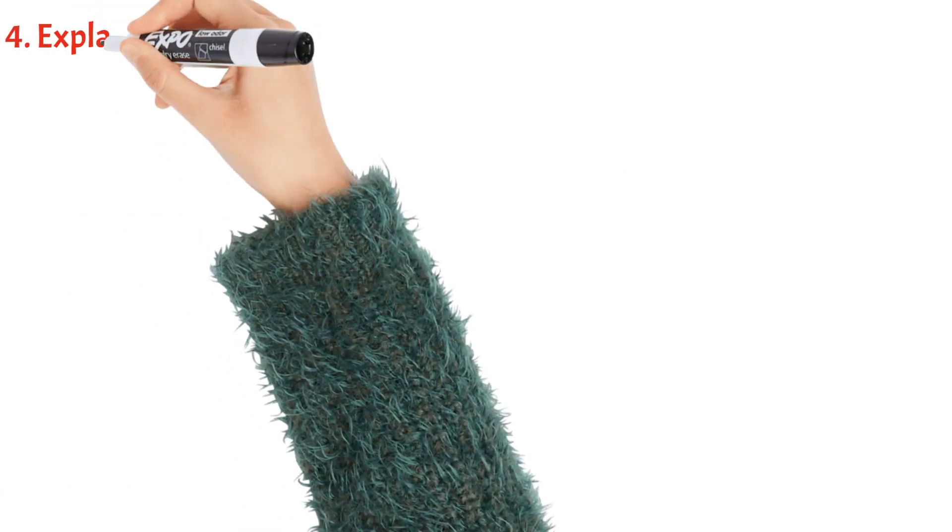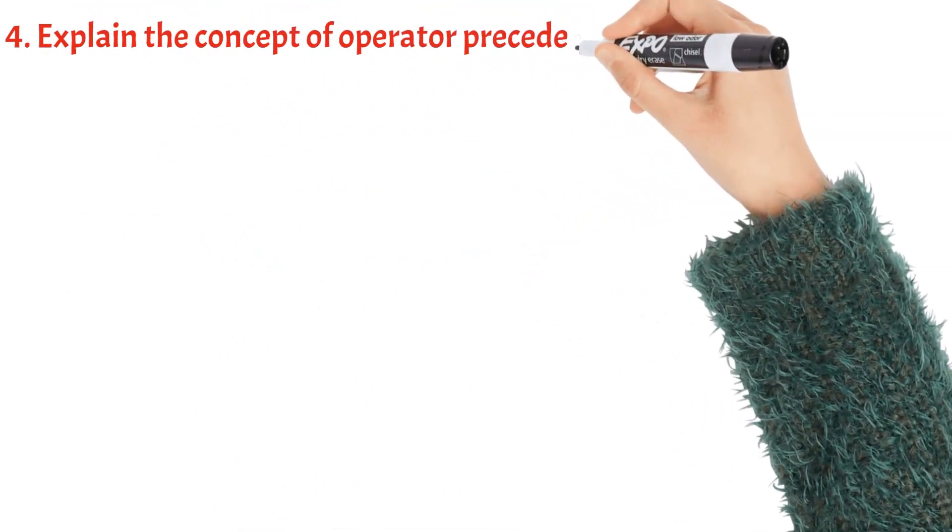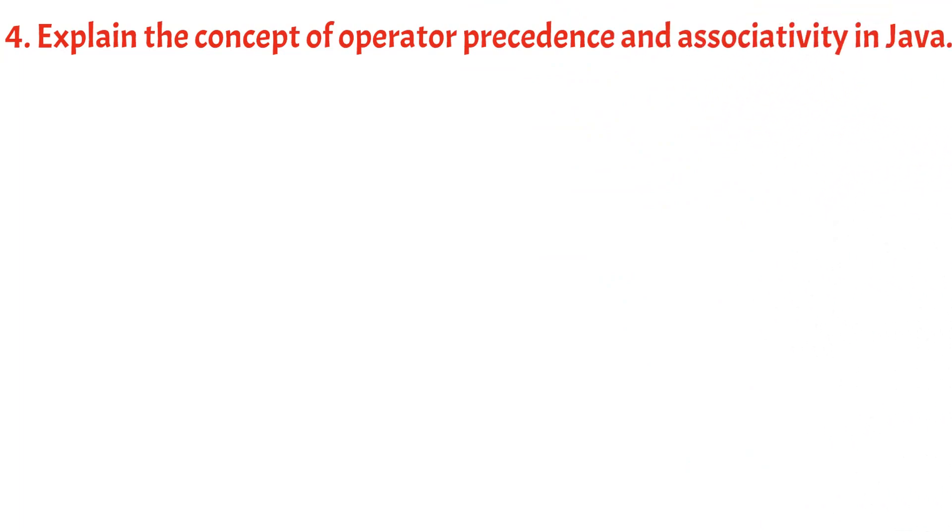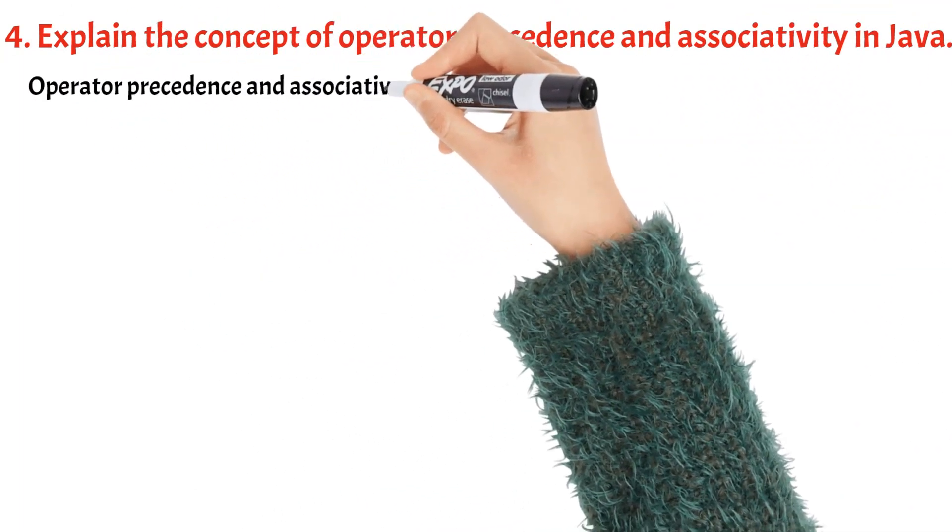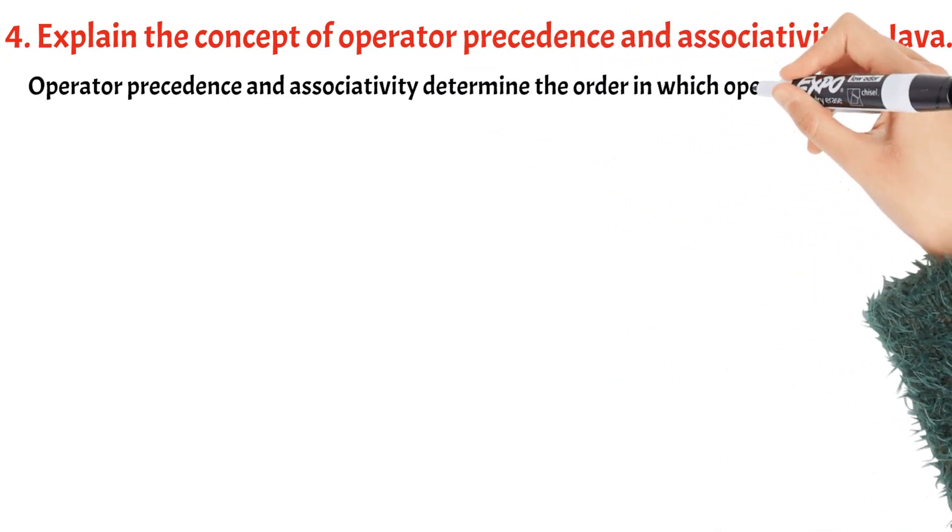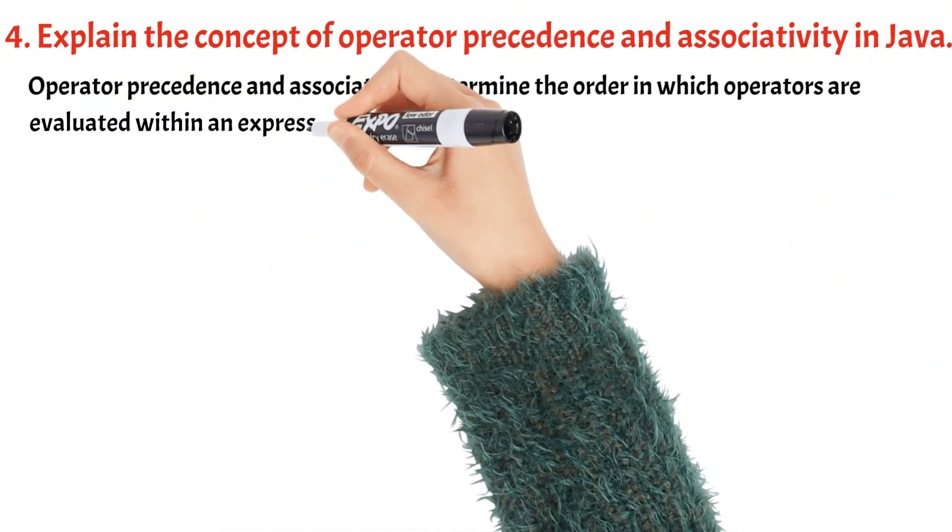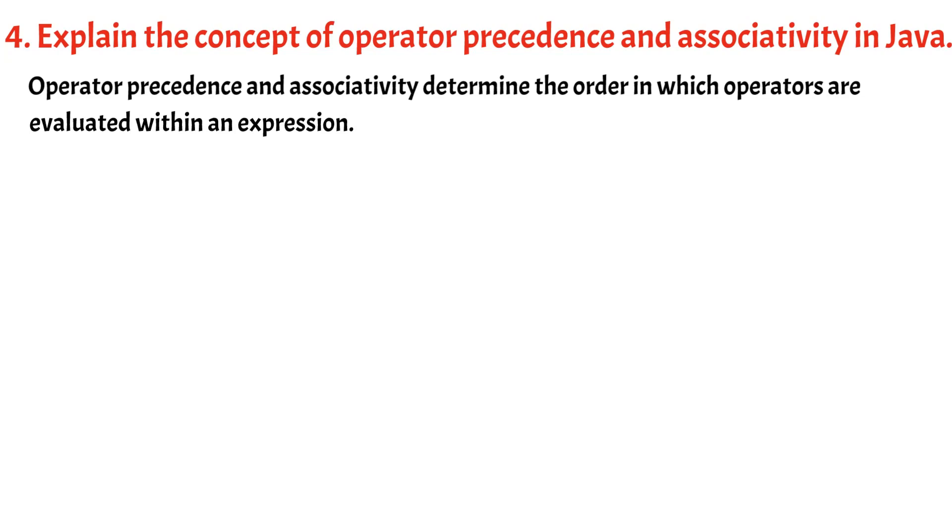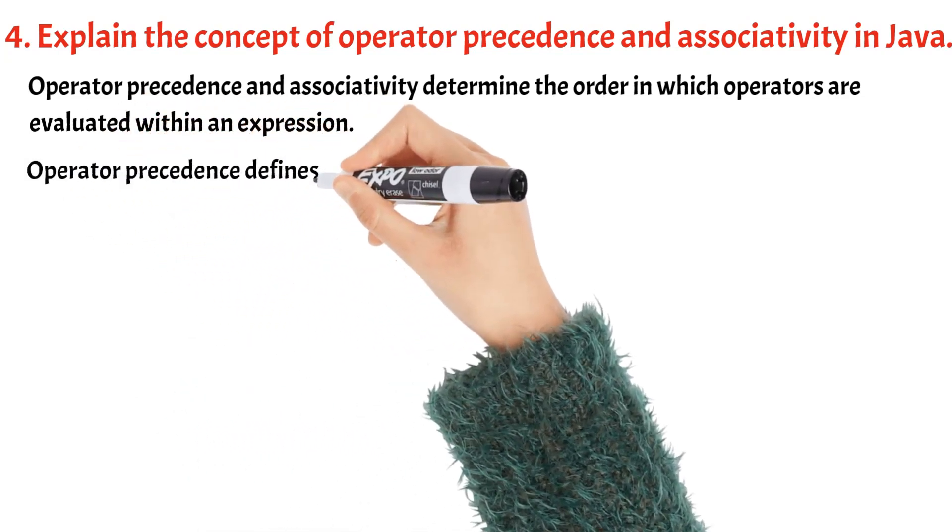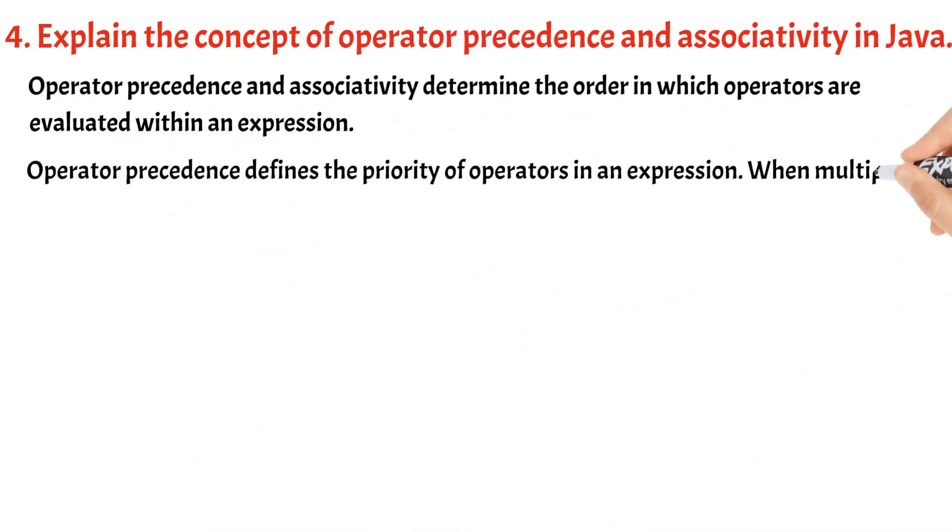Explain the concept of operator precedence and associativity in Java. Operator precedence and associativity determine the order in which operators are evaluated within an expression. Operator precedence defines the priority of operators in an expression.